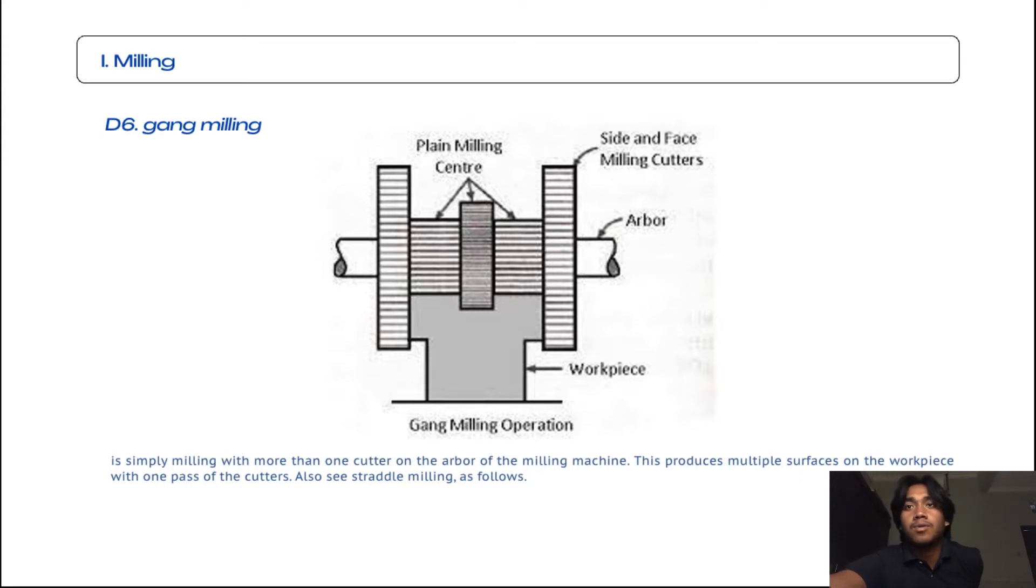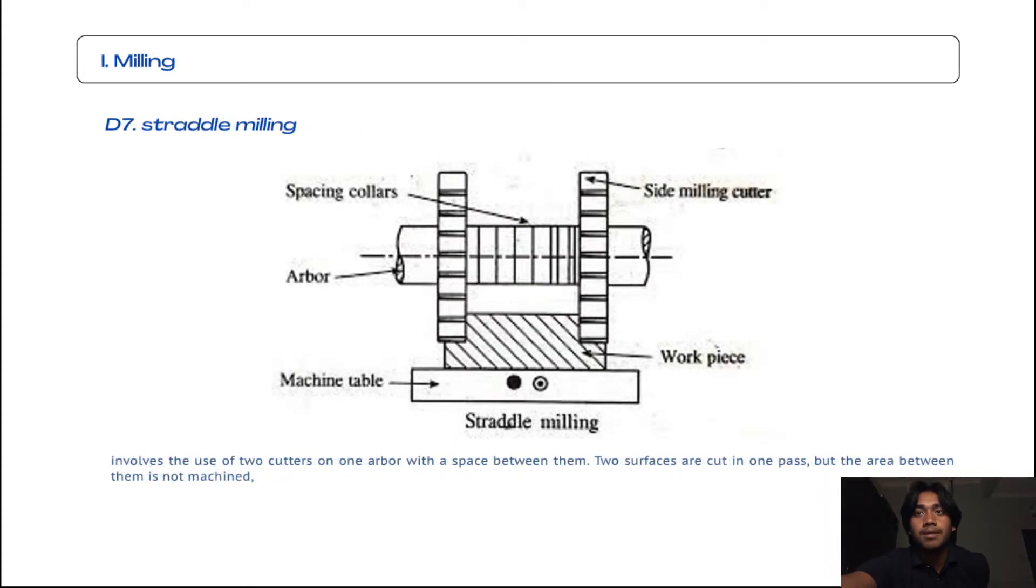From the example photos we can see plain milling cutters, side face milling cutters, and arbor together on the workpiece, then a gang milling operation can be produced. The seventh subtopic from milling is straddle milling. Straddle milling, as the example photos show, involves the use of two cutters on one arbor with a space between them. The two surfaces are cut in one pass but the area between them is not machined. As we can see, the workpiece is inside the milling cutters.